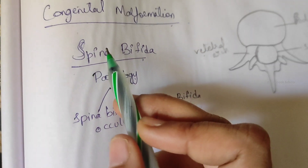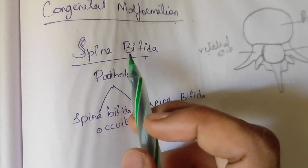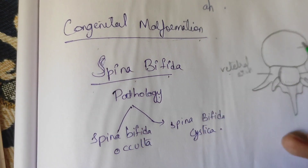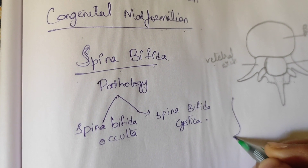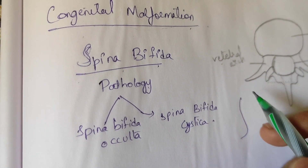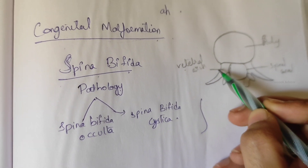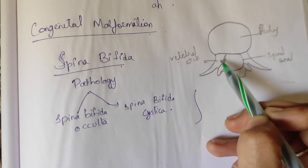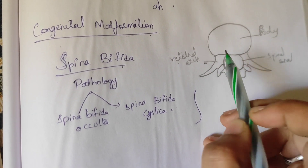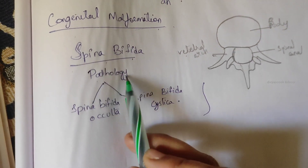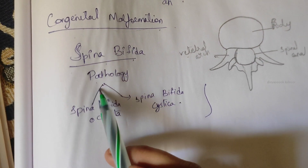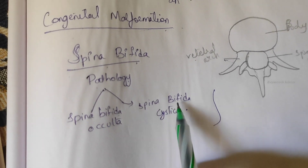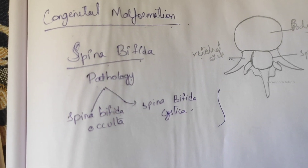Spina bifida is a developmental defect in the vertebral column, resulting in the lack of fusion of the vertebral arches, so the vertebral canal is also not closed. The pathology is of two types: spina bifida occulta and spina bifida cystica.